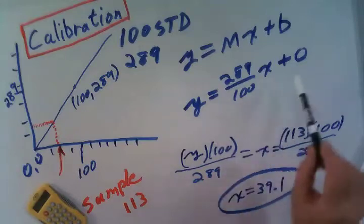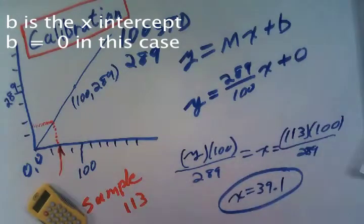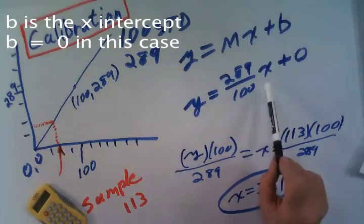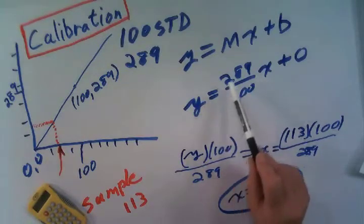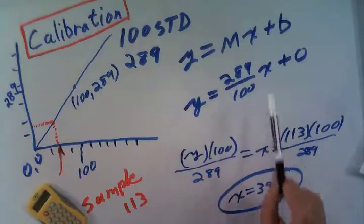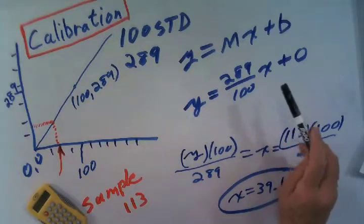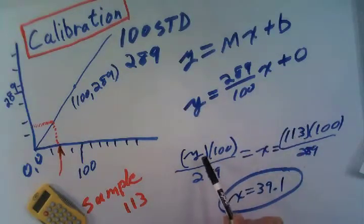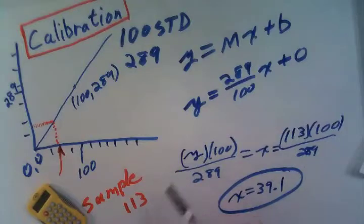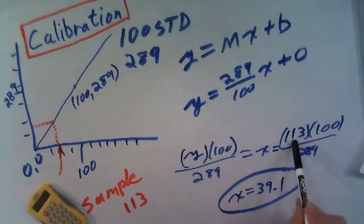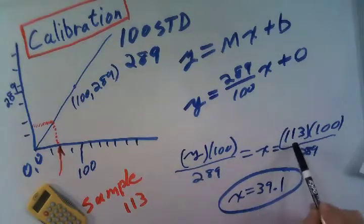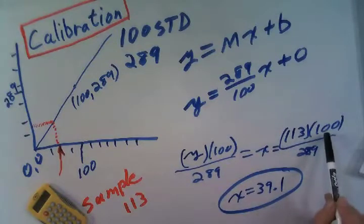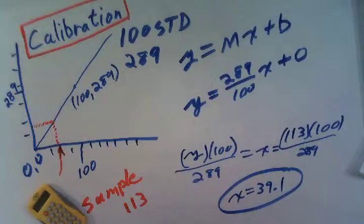This is the equation of the line. y equals mx plus b. b is 0 in this case so we can throw b away. So we solve for x and we get y times 100. Solve for x here. Put the 100 up here. Put the 289 down here. Let's look at this real quickly. x, the 289 goes on the bottom, the 100 goes on the top, which gives us this. Our y value is 113. We substitute the 113 in for the y and we end up with 113 times 100 divided by 289 and we get an answer of 39.1. And these units of course are whatever we started out with.